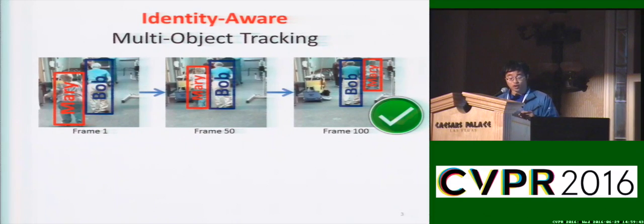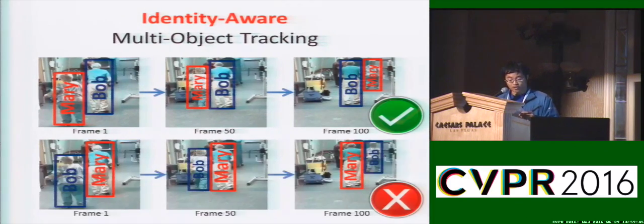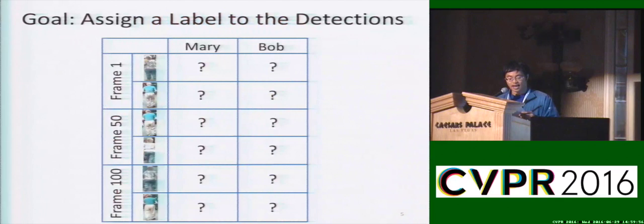However, if the tracker mistakes Mary as Bob and Bob as Mary, then the tracking is incorrect even if these two people were successfully tracked.